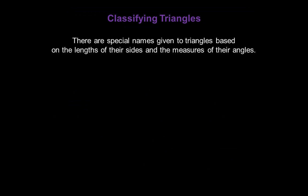There are special names given to triangles based on the lengths of their sides and the measures of their angles. First, let's take a look at the words that we use to classify triangles by the lengths of their sides. This particular triangle is called scalene. It has no congruent sides — that means each of the sides is a different length.